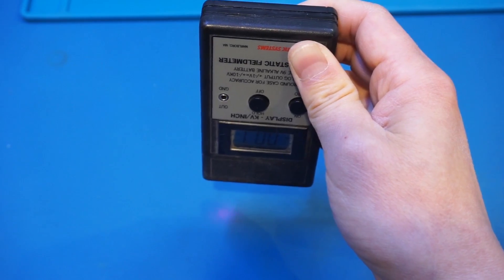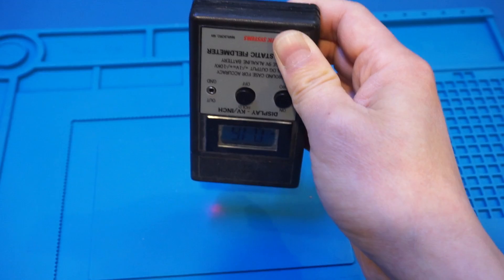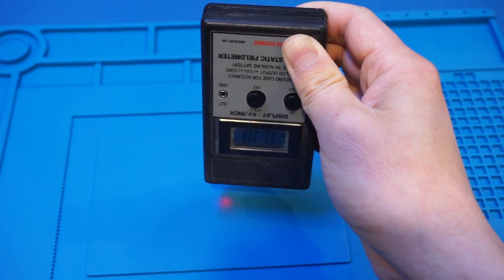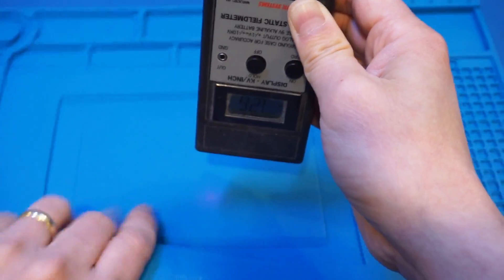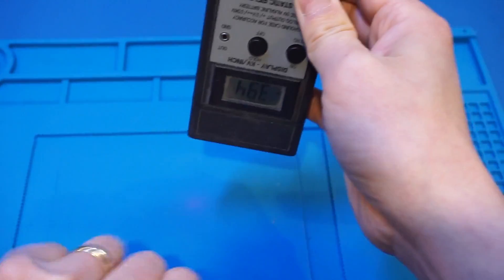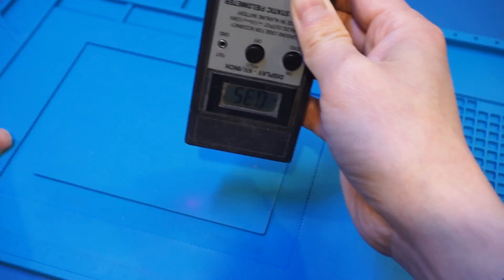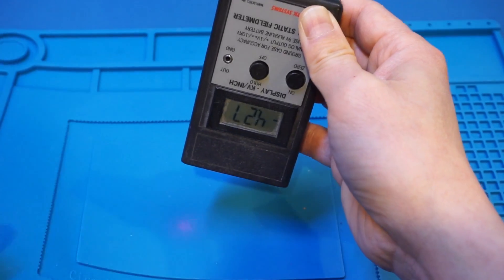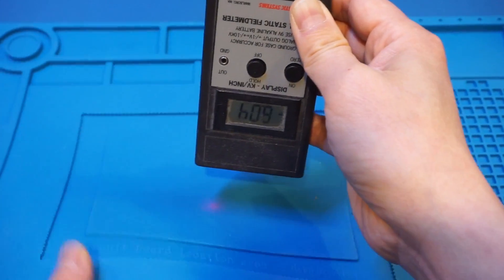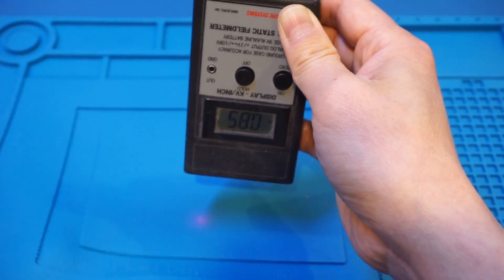Now let's take a look at the soldering mat we have here. Oh my goodness, off the bat, it's already showing some readings here. Wow, I'm not sure if you see that, but if I just kind of rub it around, you can see we have significant readings here. You can see that now it's like thousands of volts here.